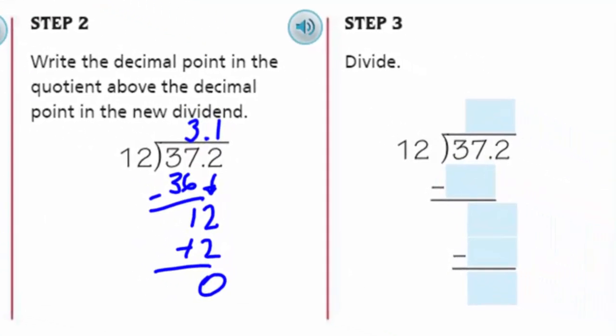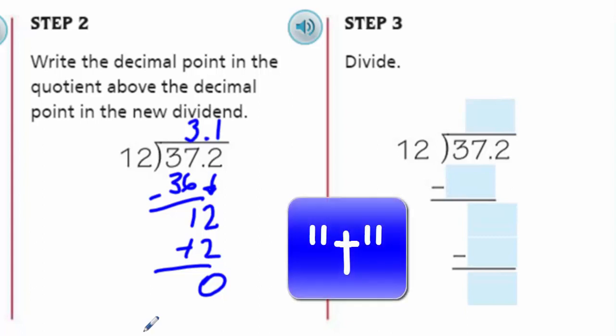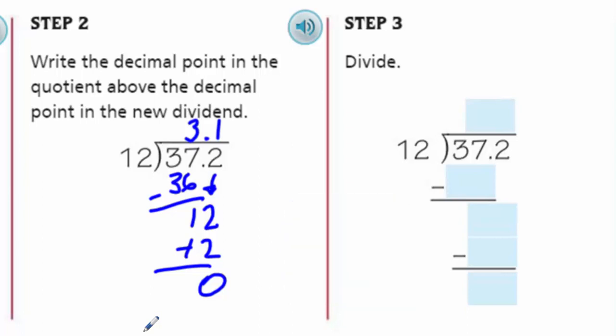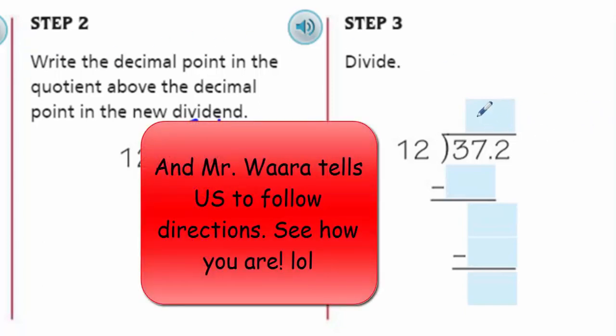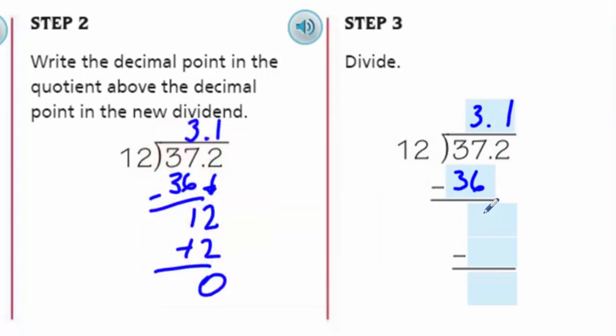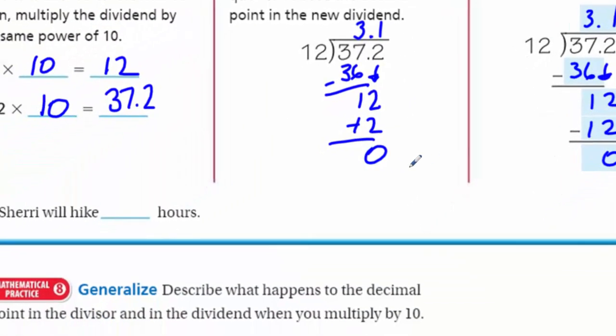Now step three here says divide. Oops. Mr. Wara, you did the whole problem on the wrong step. You didn't read the instructions carefully. Who is that guy? It's my alter ego. You know what I did? I just started doing the problem and I didn't see step three. So can I just say this is going to be the same thing? 3.1 is going to be up here. This is 36. This is one, two. And then our 12, zero. Same thing. So Sherry will hike 3 and 1 tenth hour.